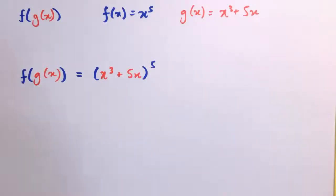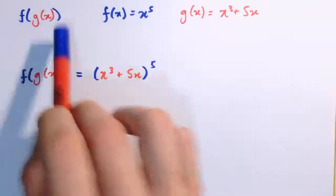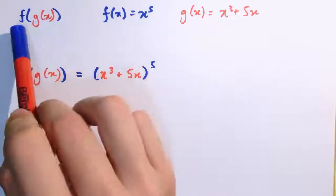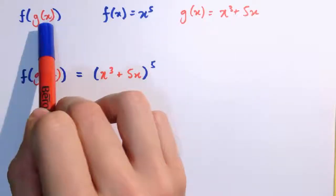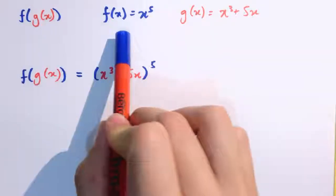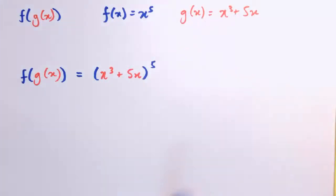The chain rule is useful when we want to differentiate a composition of functions. When we have f of g of x, it means we apply g first and then apply f to the output. For example, f of x is x to the 5, and g of x is x cubed plus 5x.